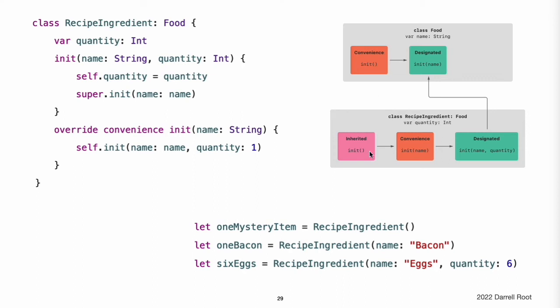Therefore, RecipeIngredient automatically inherits all of its superclass convenience initializers too. In this example, the superclass for RecipeIngredient is Food, which has a single convenience initializer called init. This initializer is therefore inherited by RecipeIngredient. The inherited version of init functions in exactly the same way as the Food version, except that it delegates to the RecipeIngredient version of init(name:) rather than the Food version.